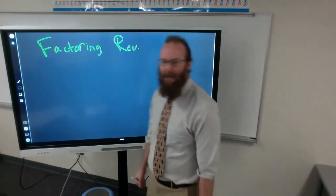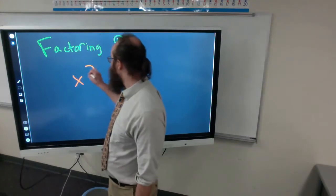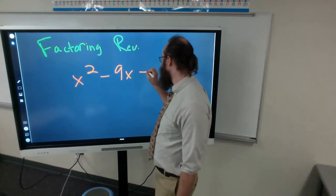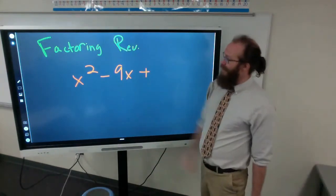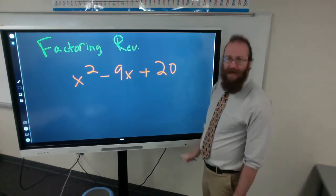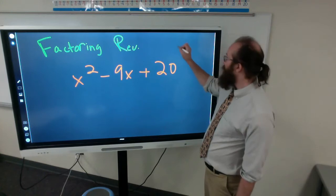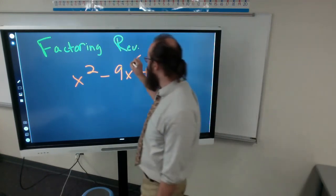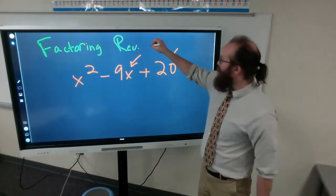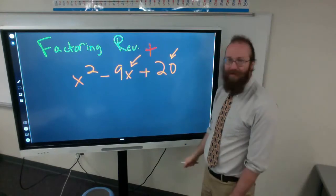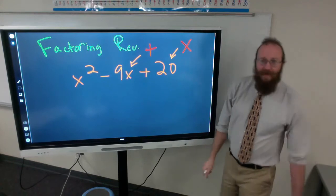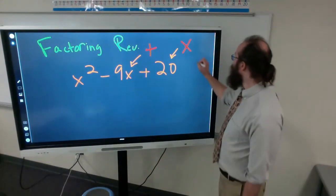What we learned about yesterday was factoring, and I wanted to revisit that topic because I didn't do the best job. When we are factoring a quadratic equation, this number in the middle is what we are adding up to, and the numerical term is what we are multiplying by. I'm going to switch up the colors to make that a little bit clearer.